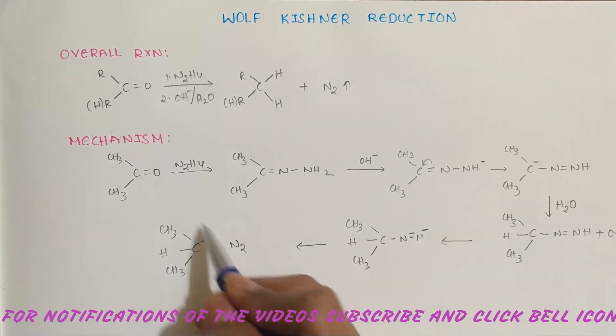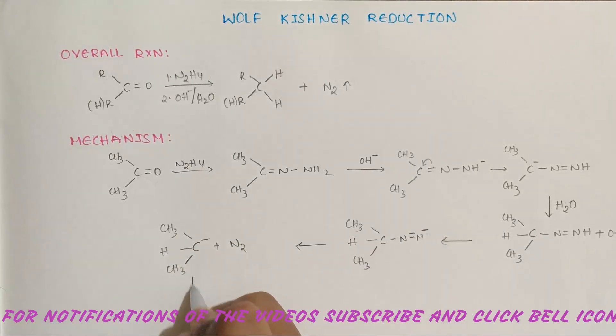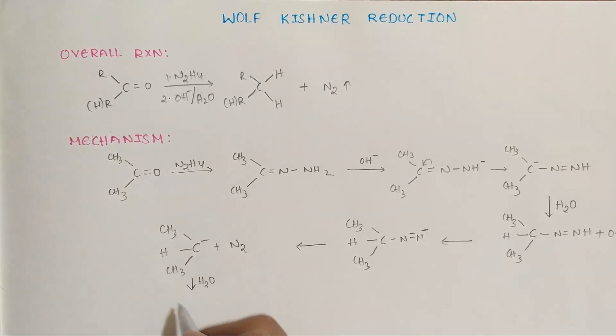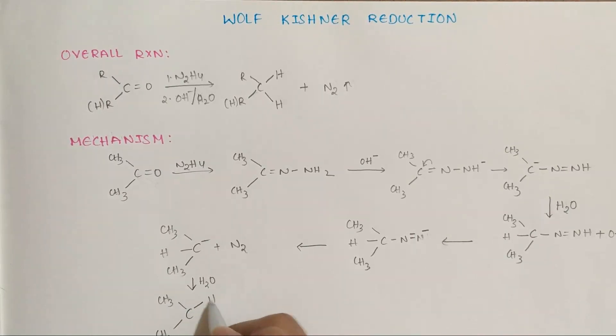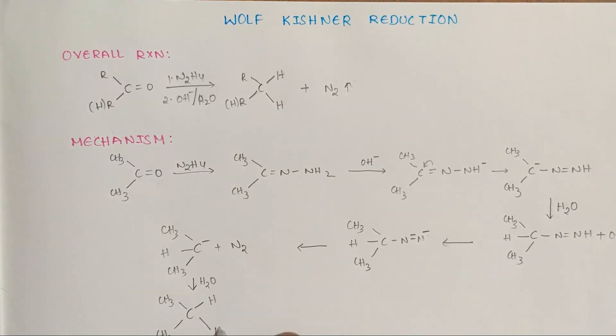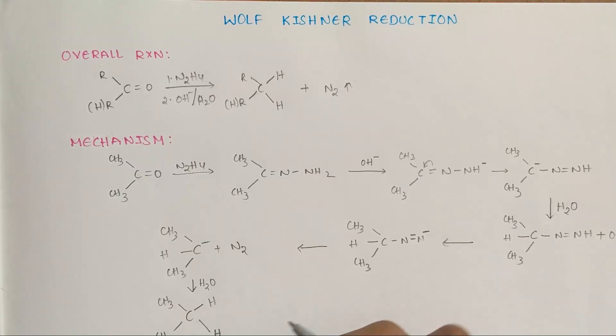And now it takes H+ from H3O+ and converts into the final product. So this is the mechanism of Wolf-Kishner reduction.